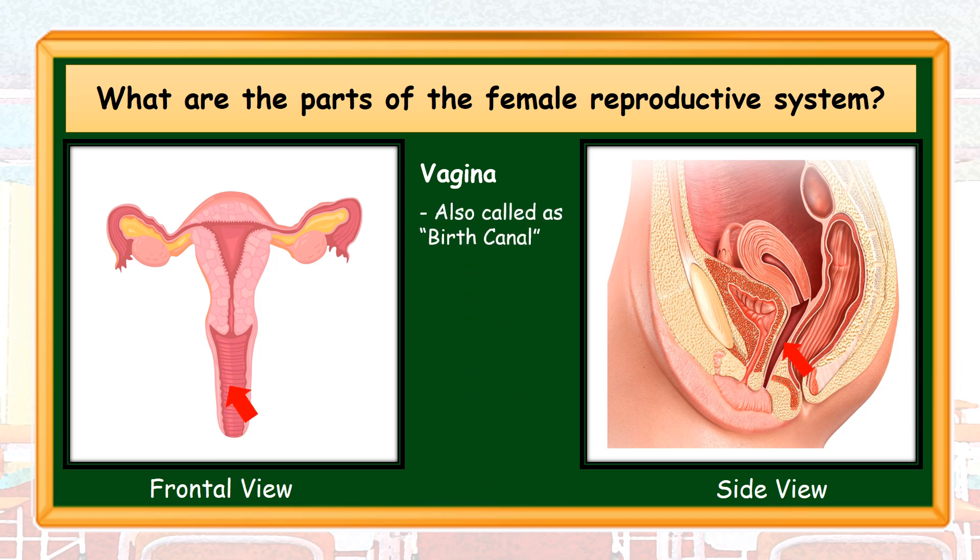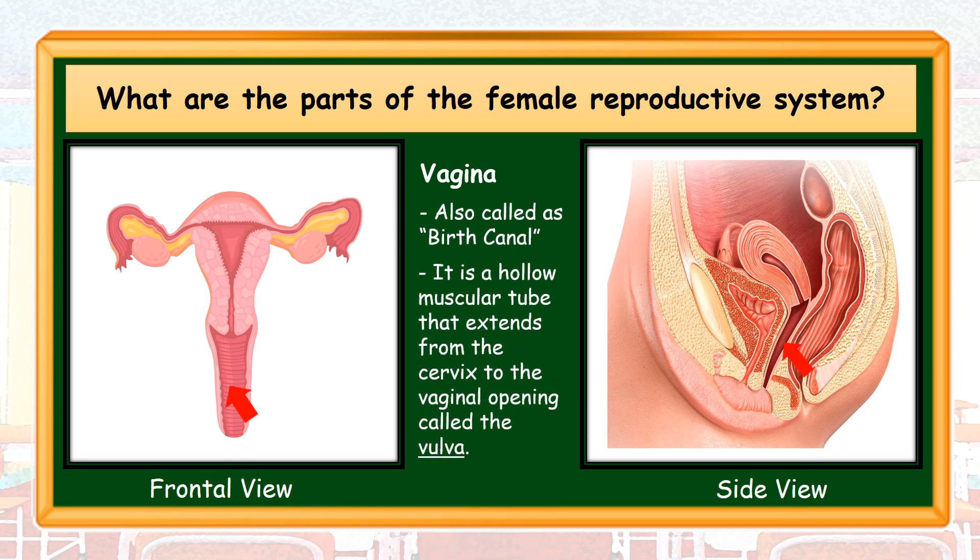Vagina, also called the birth canal. It is a hollow muscular tube that extends from the cervix to the vaginal opening called vulva. Vulva is the end of the vagina which expands as the baby passes through it during normal childbirth.